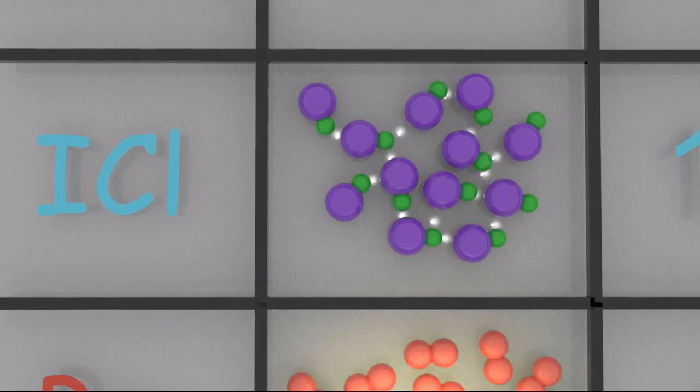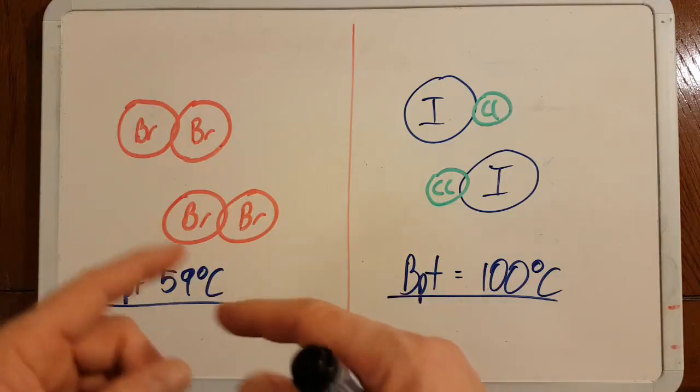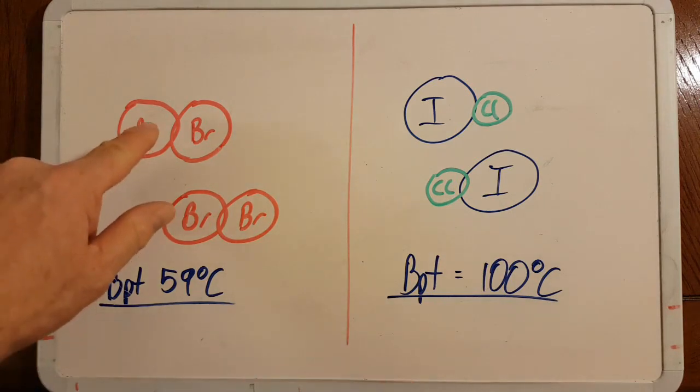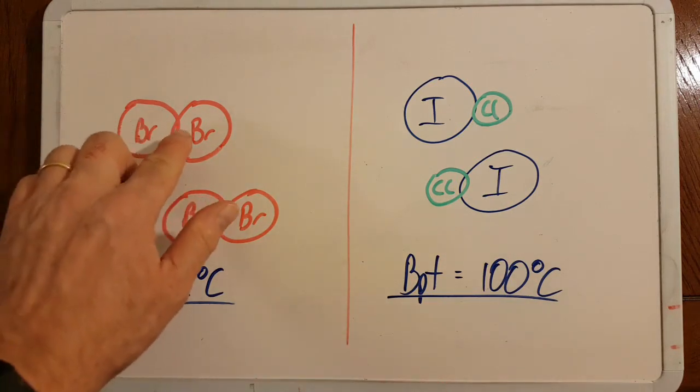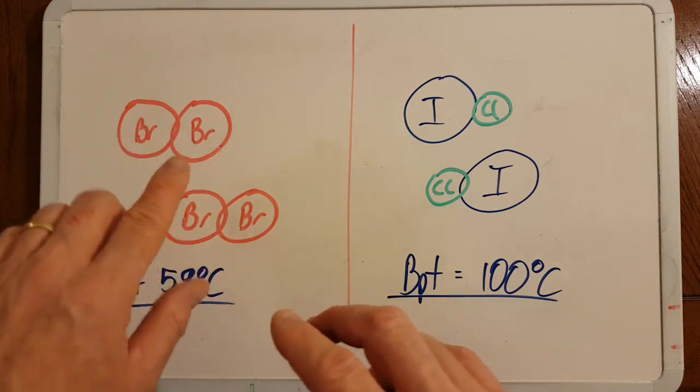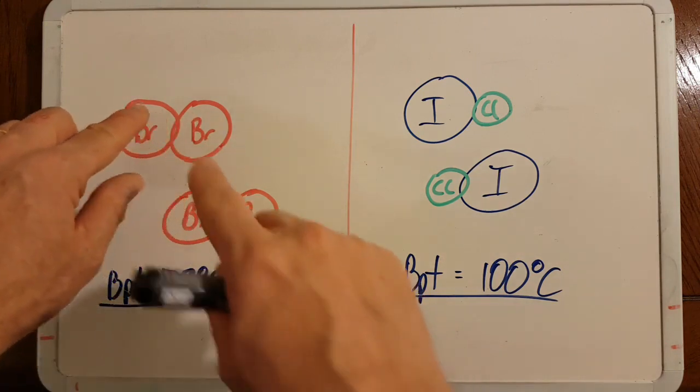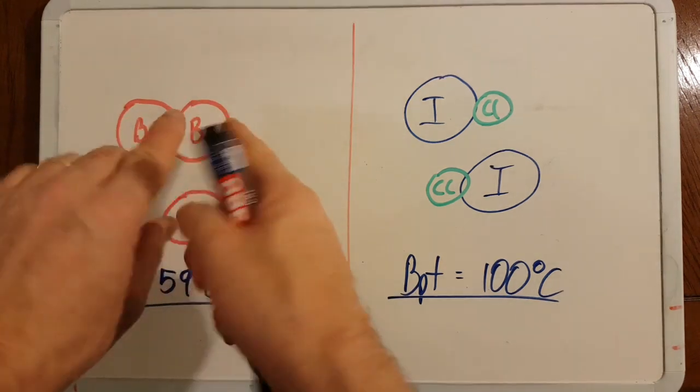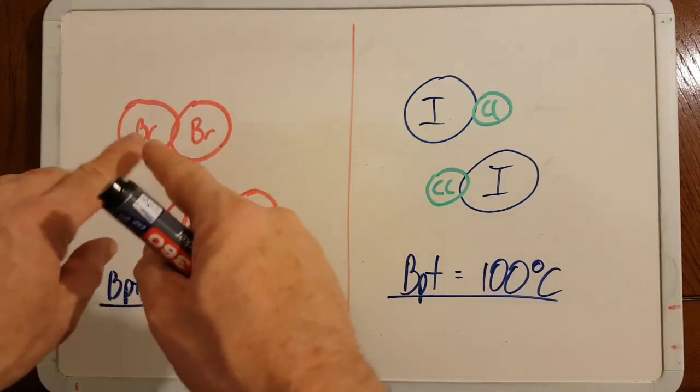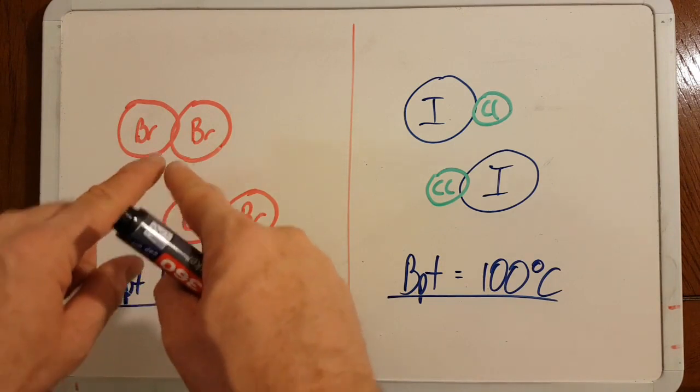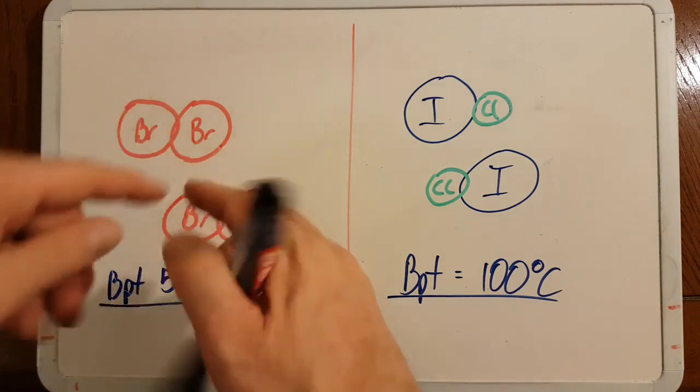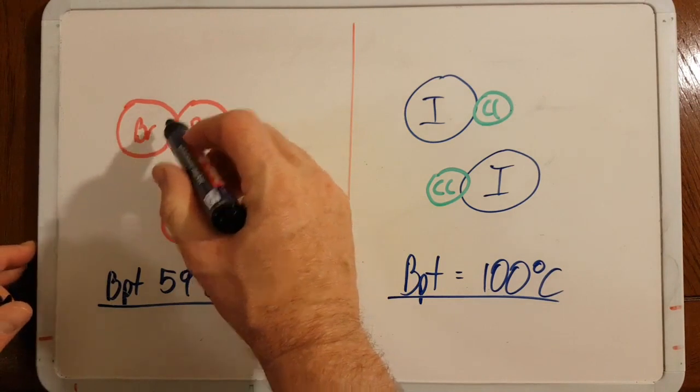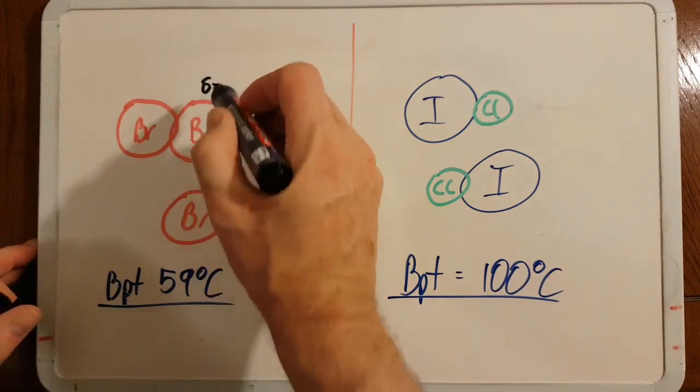A very quick recap of London dispersion forces: this bromine and that bromine both have the same electronegativity, they both love electrons the same. So there won't be a permanent charge separation; the electrons won't be over here any more than they'll be over there. But there will be a temporary charge separation as the electrons whizz around.